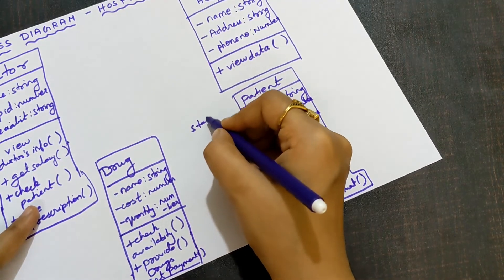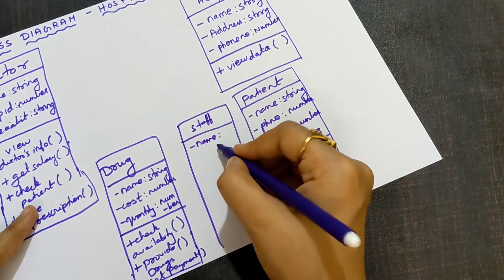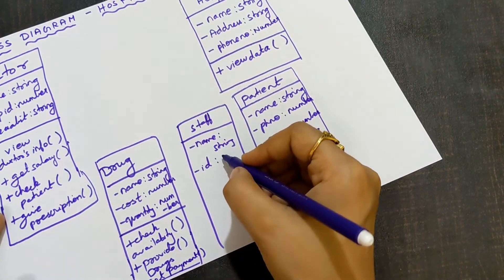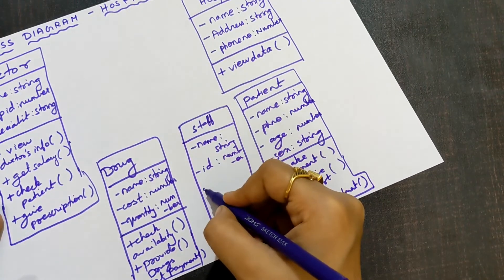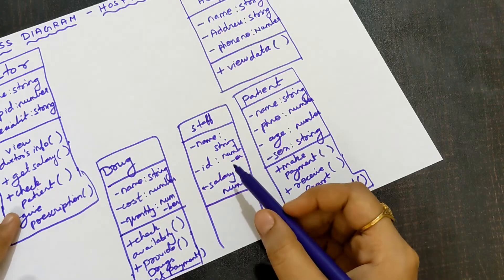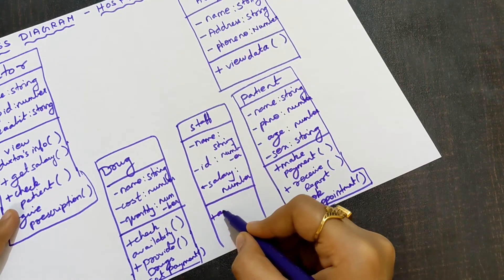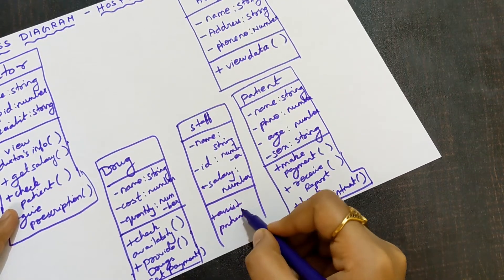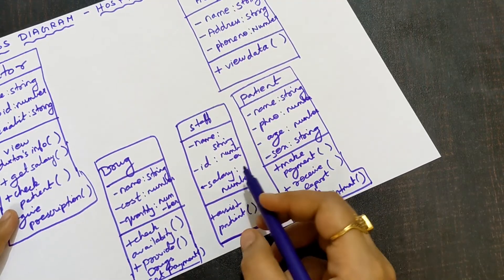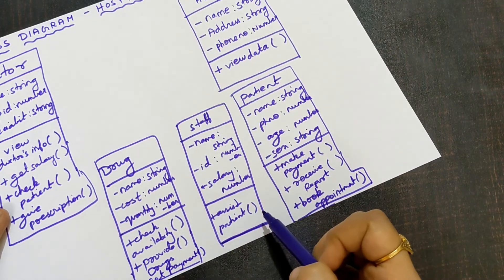The next class is staff — the staffs working in the hospital. The attributes are: name, which is of string type; ID — like the doctor's employee ID, every staff has an employee ID which is a number; and salary, which is also a number. The operation is assist the patient. Staff will assist patients — for example, if you want to fix an appointment with the doctor, you speak with the staff to get it fixed, and if you have any doubts, the staff will guide you.